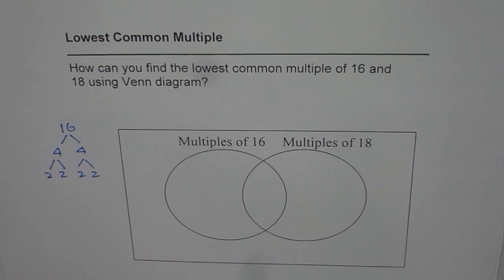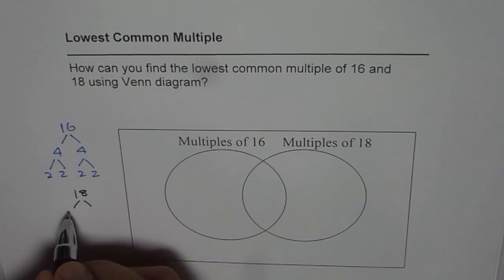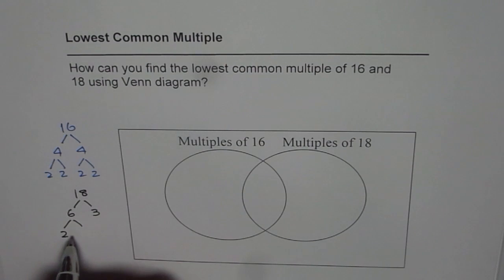How about 18? Let's do it. For 18, it is 6 times 3, and 6 could be written as 2 times 3. So that is how we can do prime factorization of 18.